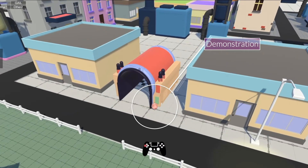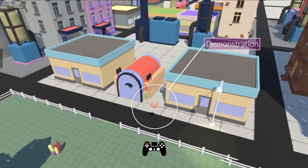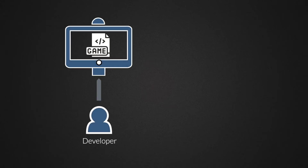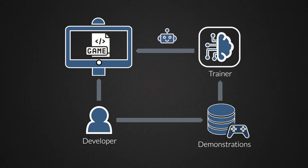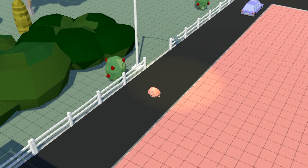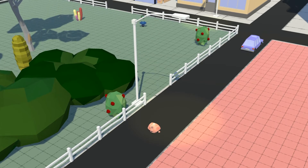In this example, we can see the designer teaching the agent how to solve a particular portion of the level. This results in a continuous feedback loop between developers and agents. Developers provide the demonstrations that will automatically train the agents with the new data, and the trained agents are deployed directly into the game editor, ready to give feedback to the developers. This allows developers to provide iterative correction for the behaviors of the agents.